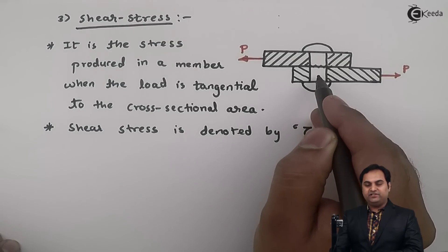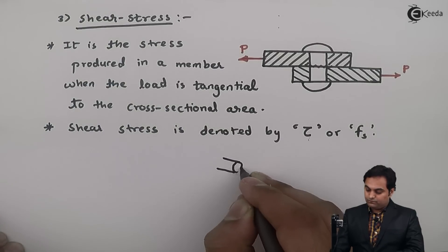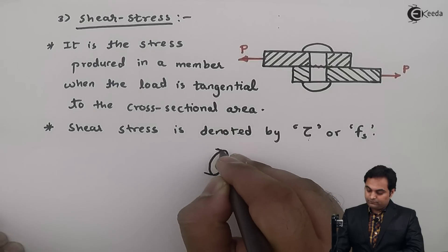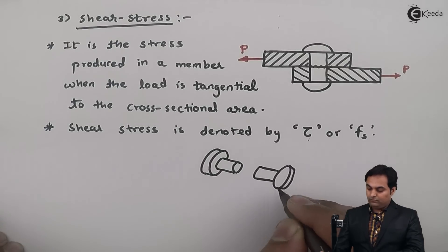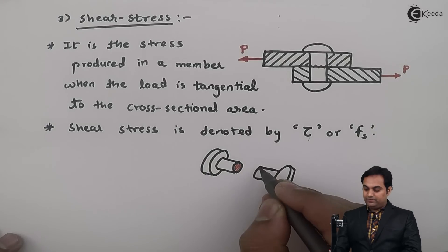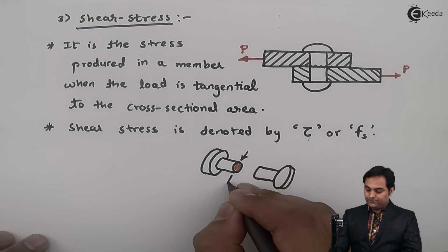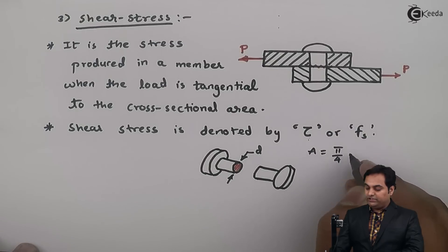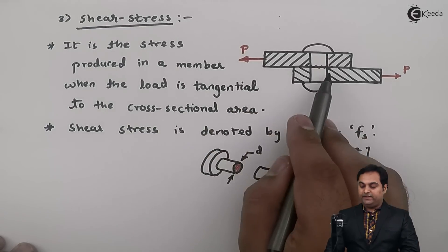If the pin connecting the two plates gets sheared, here I am drawing the broken section of the rivet. When the rivet breaks it splits into two halves, and I get the cross-sectional area which is the breaking area. If the diameter of the rivet is small d, then the cross-sectional area A will be pi/4 times d squared. The cross-sectional area and load are tangential, which is why the effect is shear.